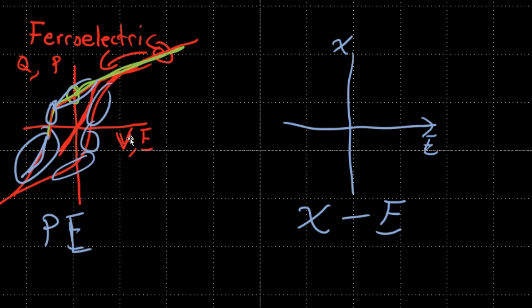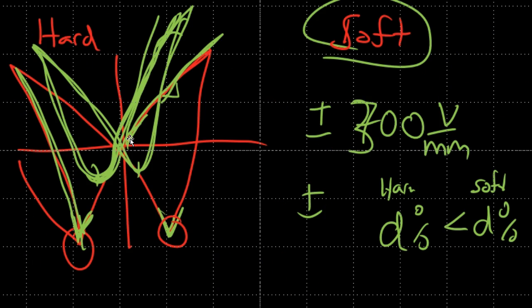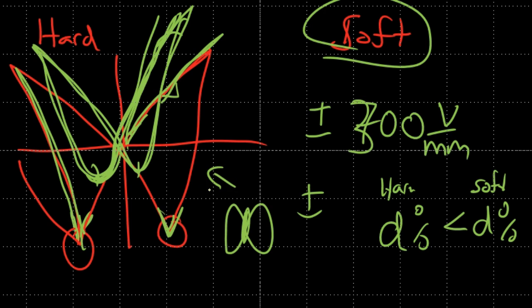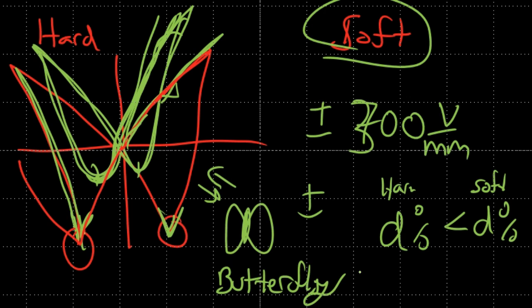The hard material curve is called a butterfly curve — you can see why, as it resembles butterfly wings. The soft material curve has a different, more rounded shape. There are many resources and videos online for ferroelectric materials that I encourage you to look at for demonstrations. Thanks for watching.